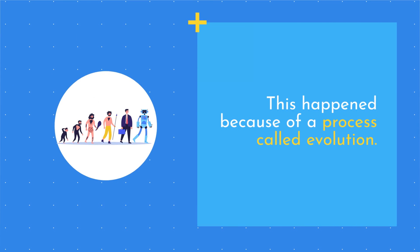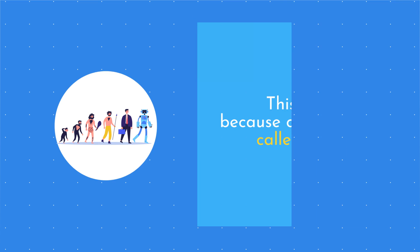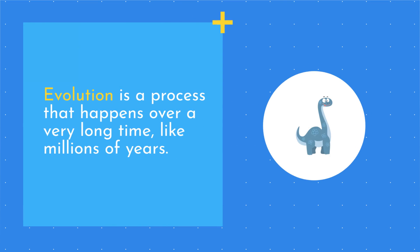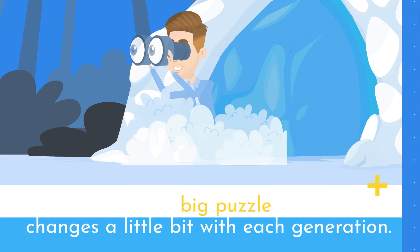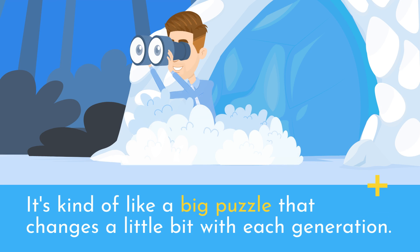This happens because of a process called evolution. Evolution is a process that happens over a very long time, like millions of years. It's kind of like a big puzzle that changes a little bit with each generation.